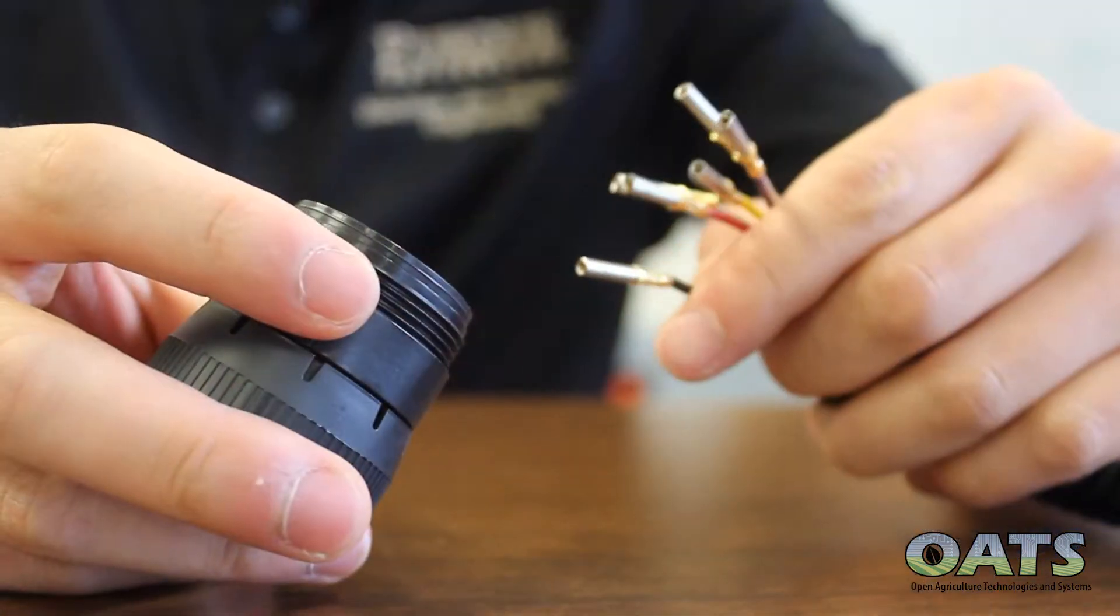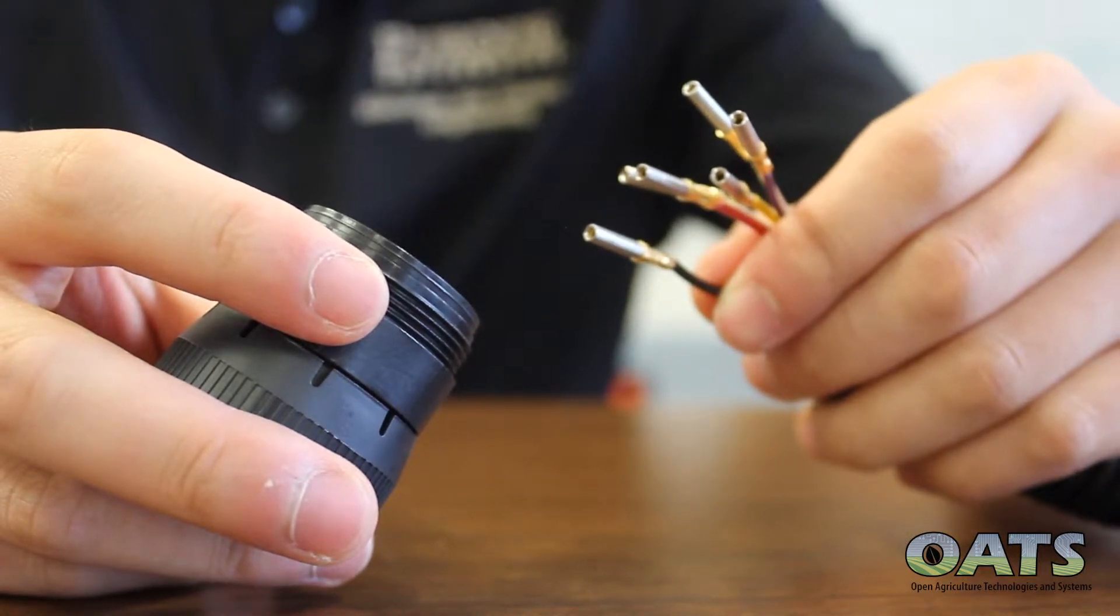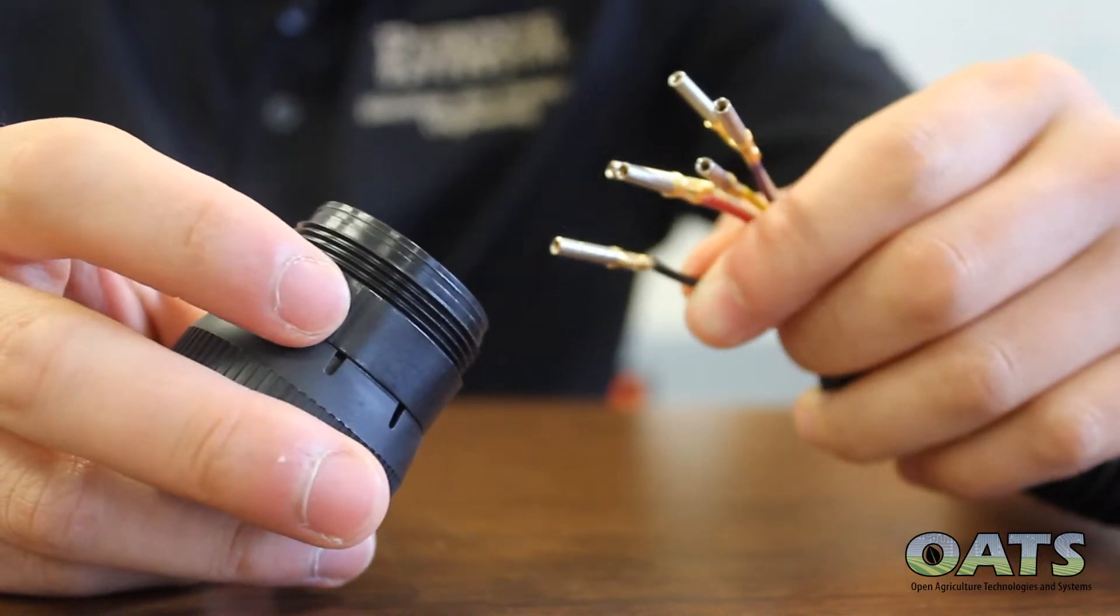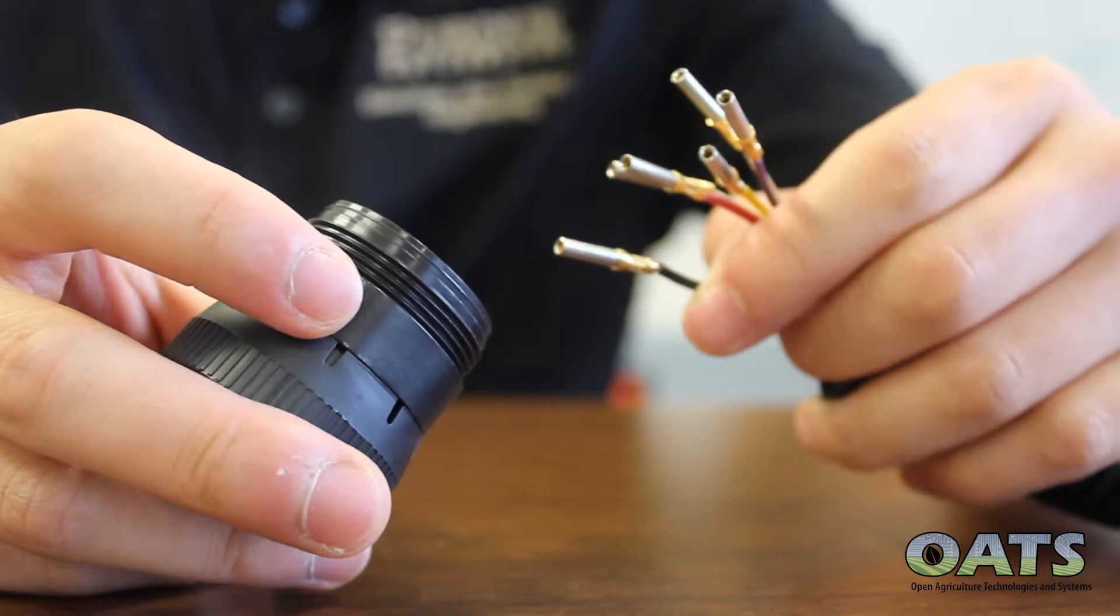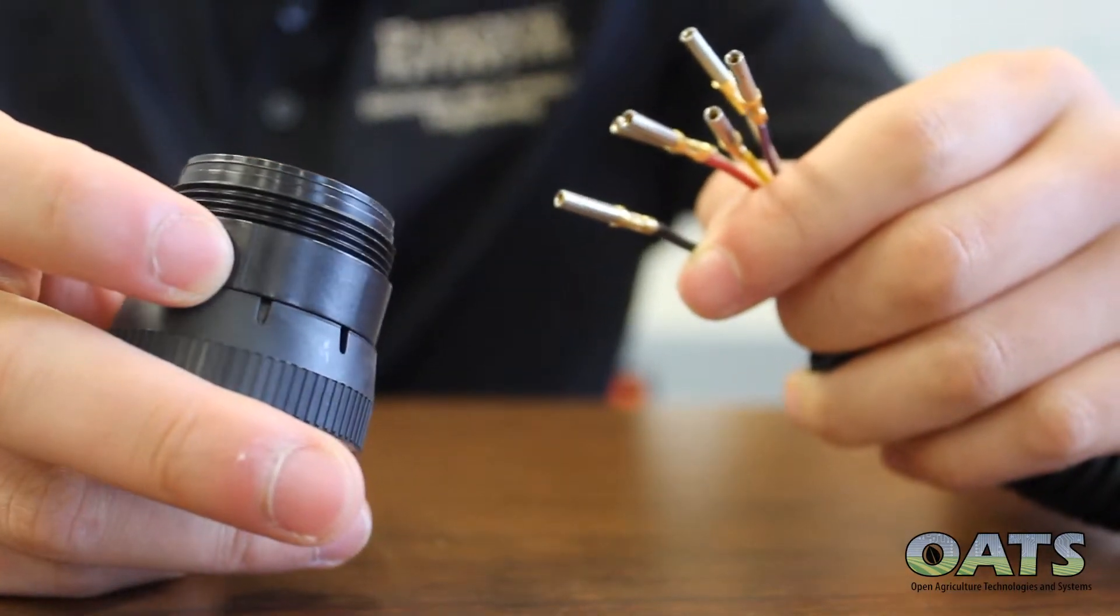Using the same color to letter scheme that we used to build the isobus male port, we will insert the same wires onto the isobus female port.